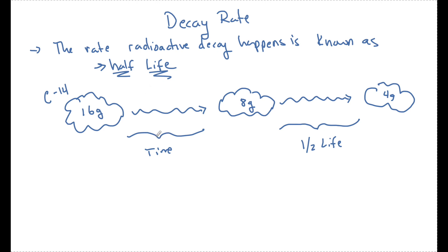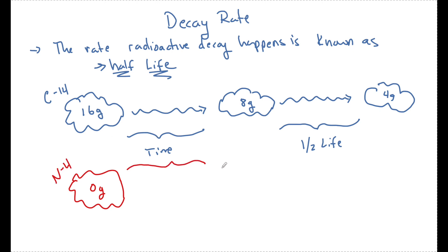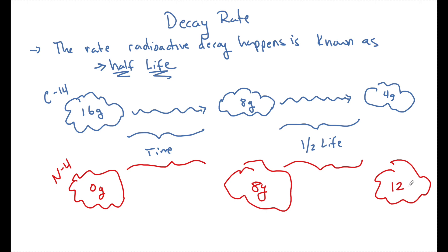As we just saw from beta decay, there has to be a resulting element that gets transmutated out. When carbon-14 goes through a radioactive decay, another element must be formed — and the decay of carbon-14 is a beta decay. So initially it's going to have no other elements, but as it decays it's going to turn into nitrogen. So I would have zero grams of nitrogen-14 at the start. But as this half-life goes on, now I have 8 grams of nitrogen-14. And after another half-life of carbon, I will have 12 grams of nitrogen-14. As the carbon number goes down, the nitrogen number goes up.